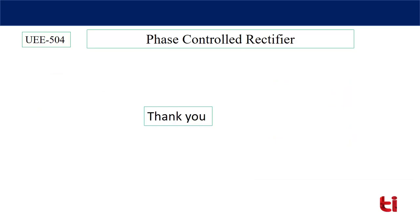Today we have discussed the single-phase half-wave thyristor-based phase-controlled rectifier. We found the average output voltage, RMS output voltage, average output current, RMS output current, and ultimately the input power factor of the complete system. In the coming classes, we will see this phase-controlled rectifier with different types of loads.